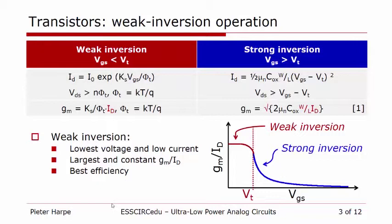Traditionally, transistors, for example in amplifiers, are biased in a strong inversion mode in saturation. This means that you put the gate-source voltage above the threshold, and then you get the known relations of the current and the transconductance. However, for low-power design, people prefer to bias the transistors in a weak inversion mode, where the gate-source voltage is below the threshold voltage. There are several advantages of doing that. The first one is that you can use lower voltages for the gate-source and drain-source voltages, which means you can operate from a lower supply, and because of that you save power.